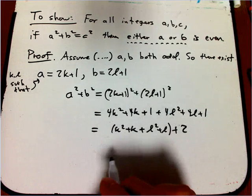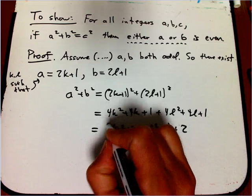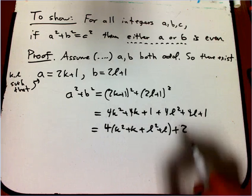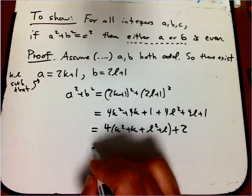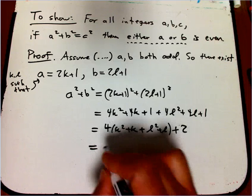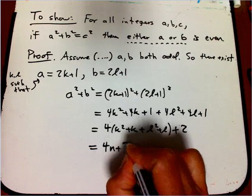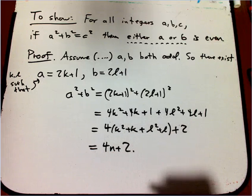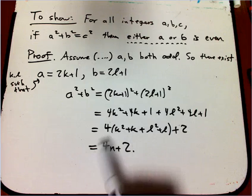k squared plus k plus l squared plus l. And actually, let me, why did I say 8? That's just stupid. It's 4, and that's what I want anyway. So that's of the form 4n plus 2. Now I claim that that cannot be a square.